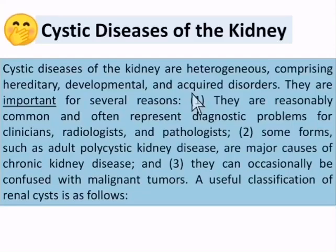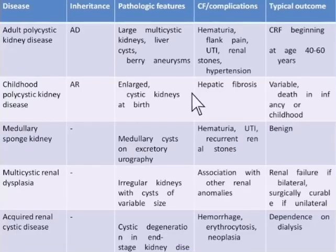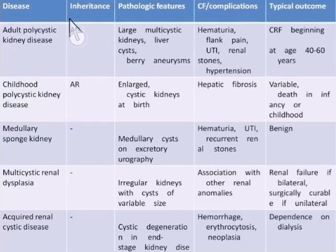Systemic diseases of the kidney are heterogeneous, comprising hereditary, developmental, and acquired disorders. They are important because some forms, such as adult polycystic kidney disease, are a major cause of chronic kidney disease, and they can occasionally be confused with malignant tumors. The classification of cystic diseases includes: number one, adult polycystic kidney disease, which is usually autosomal dominant.